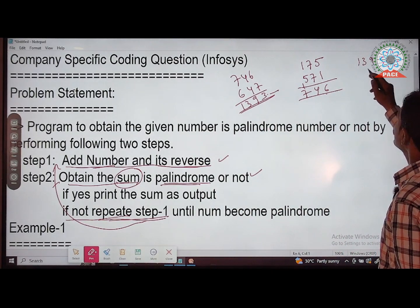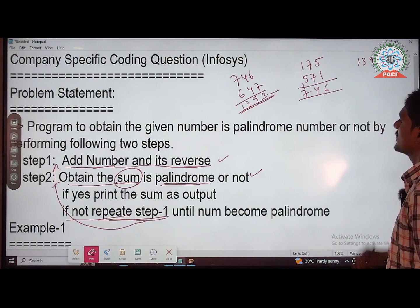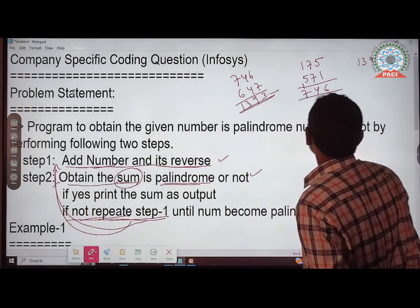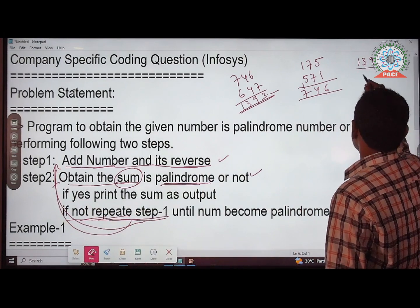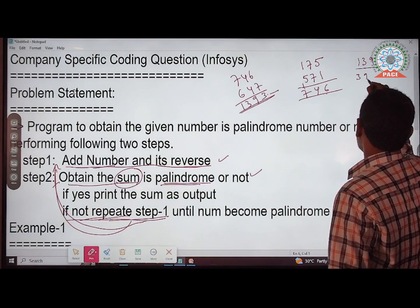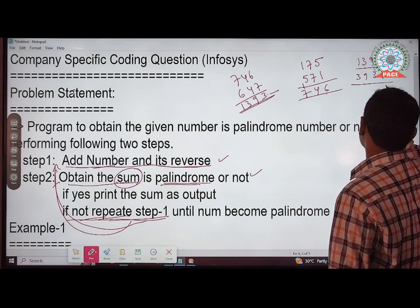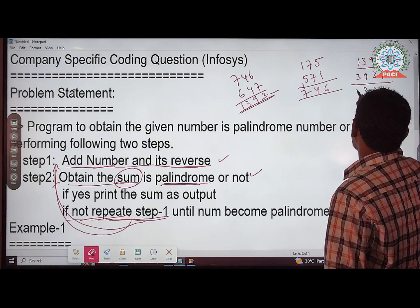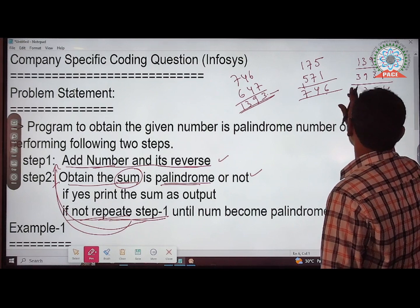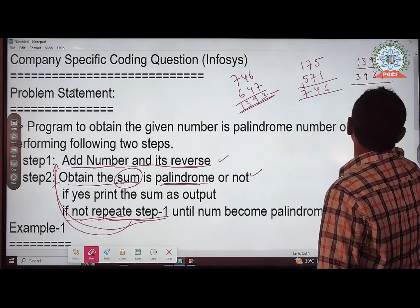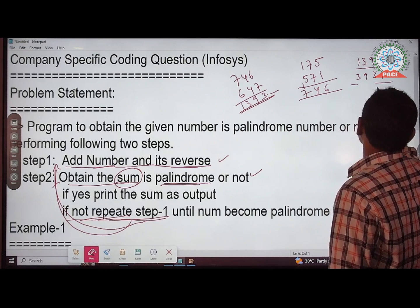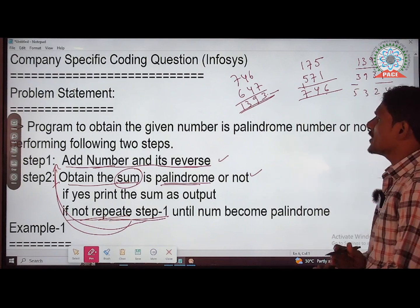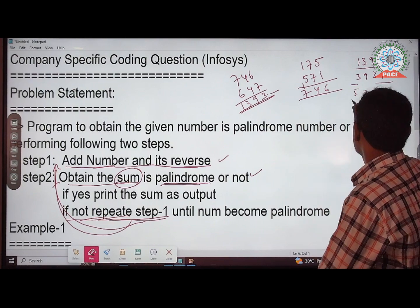Since 1393 is not a palindrome, repeat step one again. Add 1393 and its reverse 3931. The result is 5324. We know 5324 is not a palindrome number.